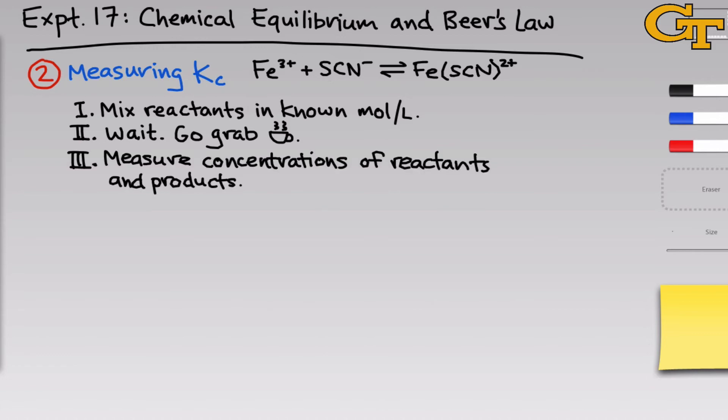Once equilibrium has been achieved, the next step is to measure the concentrations of reactants and products. Once we have those in hand, we can simply plug those into the equilibrium expression to calculate Kc. I won't talk about determining equilibrium expressions—you'll talk about this in lecture in great detail. The equilibrium constant for this reaction is equal to the concentration of the complex, or the product, divided by the concentration of Fe3+ times the concentration of SCN-. This is the so-called equilibrium expression for this reaction. Truthfully, once you understand how to write equilibrium expressions, the trickiest part of this entire process actually becomes step three, measuring concentrations.